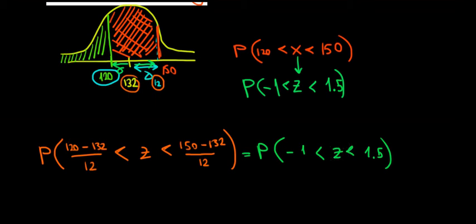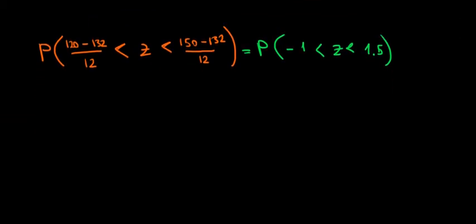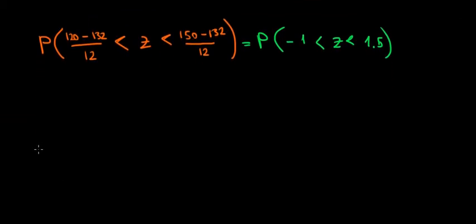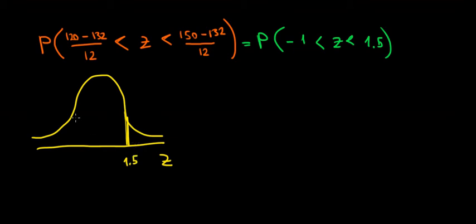Now, let's draw the z distribution, and we're going to see how we find it, because we'll have to work with the values from the table, from the table of the z distribution. This is going to be our z distribution over here. Now, we want to find out what is the area between the value of 1.5 and minus 1. We are looking for this area over here.